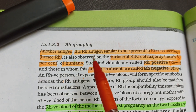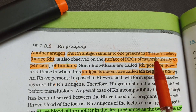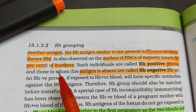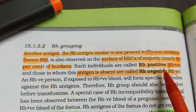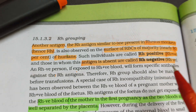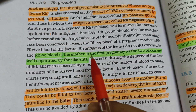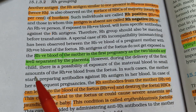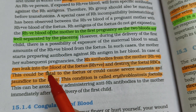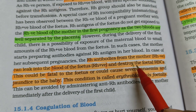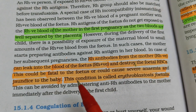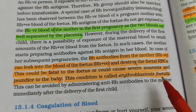Rh grouping involves another antigen — the Rh antigen — similar to the one present in Rhesus monkeys. Nearly 80% of humans have this antigen on the surface of their RBCs and are called Rh positive; those without it are Rh negative. In a pregnancy where an Rh-negative mother carries an Rh-positive fetus, Rh antibodies from the mother can leak into the fetal blood and destroy fetal RBCs, causing fatal anemia or jaundice. This condition is called erythroblastosis fetalis.